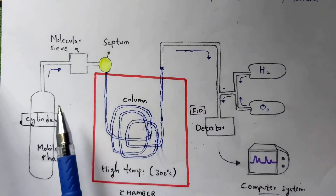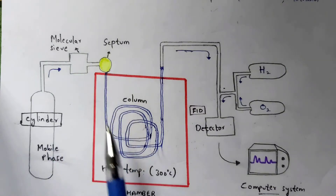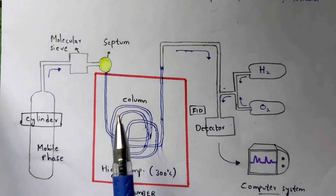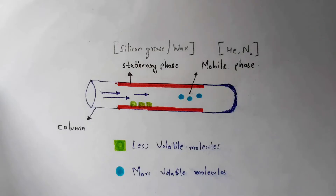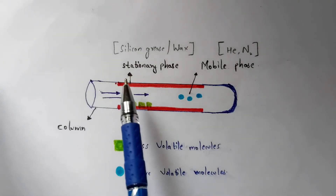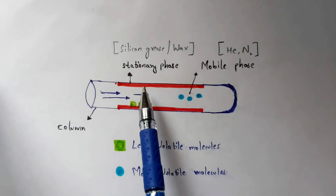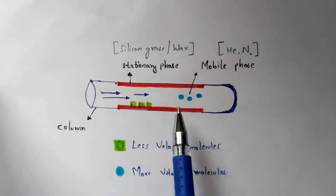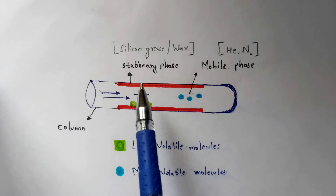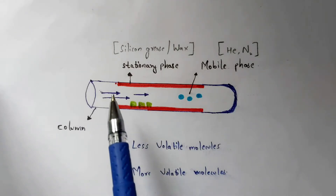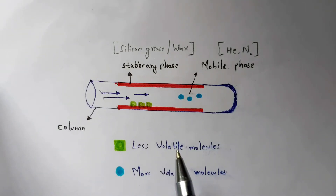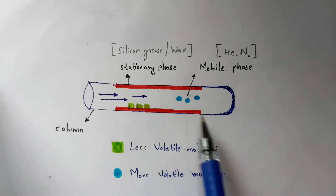The sample mixes with the gas from the molecular sieve and enters the column, where the separation process occurs. Looking at a zoomed section of the column, the stationary phase made of silicon grease or wax lines the inner surface, while the mobile phase — helium or nitrogen gas — flows through the center.